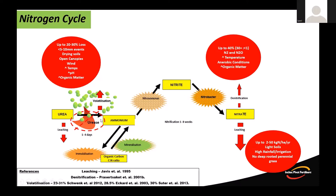Urea converts into ammonium nitrogen within one to four days. Ammonium nitrogen is quite stable, sits in the soil, and can be taken up by plants. But it goes through an unstable phase where it can convert into ammonia carbonate and be lost to the atmosphere. To minimise those losses and reduce urease enzyme activity, timing and conditions at application make a large difference — losses can be up to 20 or 30 percent of applied nitrogen through volatilisation. In pasture systems, volatilisation is a bigger issue than in cropping because of higher organic carbons and greater urease enzyme activity.